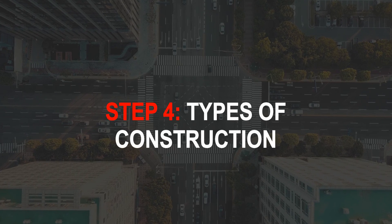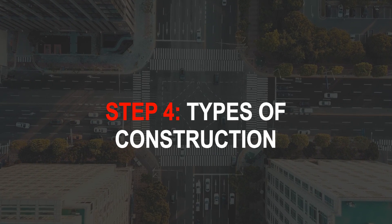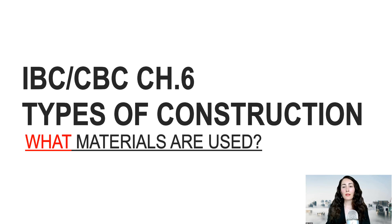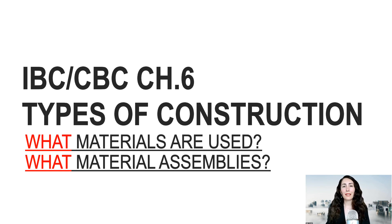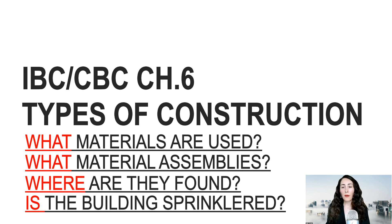Step four is to identify the construction type of the building in your code analysis. You're going to start by asking yourself: what is this building made out of, what materials? How do these materials come together to create assemblies, and where are these assemblies and materials found in the building? Are we going to have sprinkler systems or not? Depending on the materials and assemblies used and where they're used in the building, the construction type will determine a lot of key things about your building — from how fire resistive your building will be and its elements.